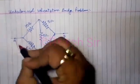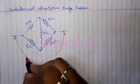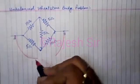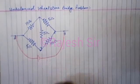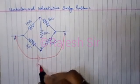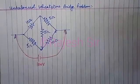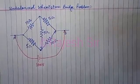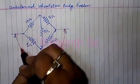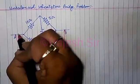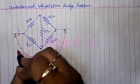What we do instead is connect a known voltage — let's say 100 volts — across the diagonal AB. You can see I have connected a known voltage of 100 volts, and now I send the current from this battery into this network of resistances.